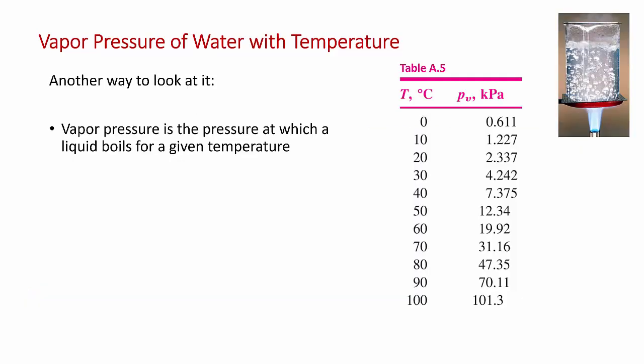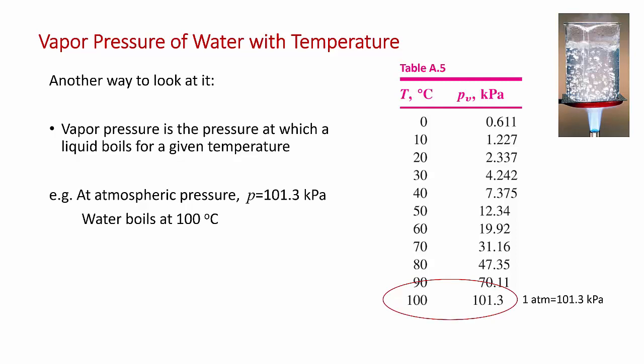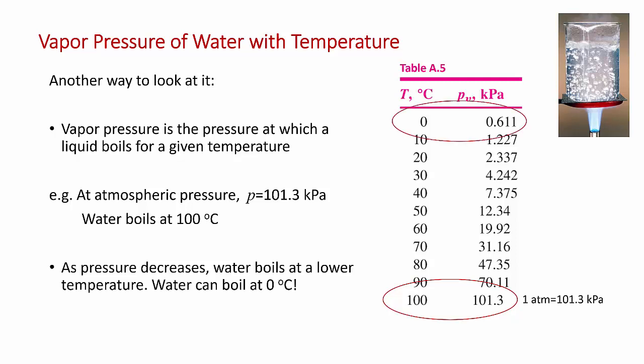Here's a table taken from the appendix of your textbook, which shows the relationship between temperature and vapor pressure. This is another way to think about vapor pressure. Vapor pressure is the pressure at which a liquid boils for a given temperature. For example, we know that at atmospheric pressure, about 100 kPa, water boils at 100 degrees C. But as you lower the pressure, water boils at a lower and lower temperature.